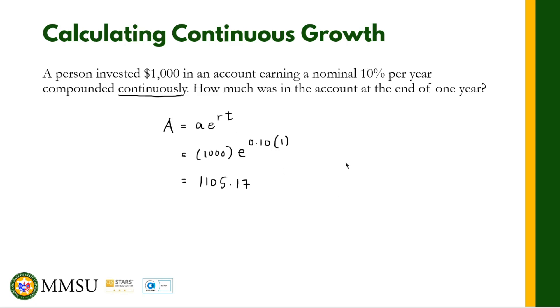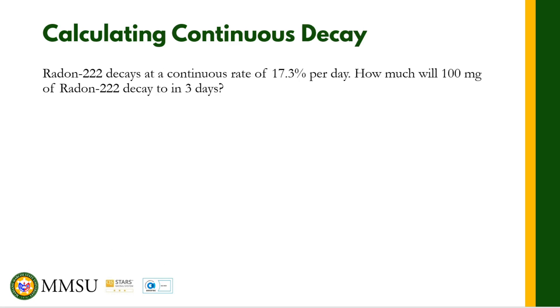So that's the value of the money. $1,000 became $1,105 after one year for a 10% compounded continuous investment. Let us take another example here. This is an exponential decay or continuous decay in particular. So we have Radon-222.